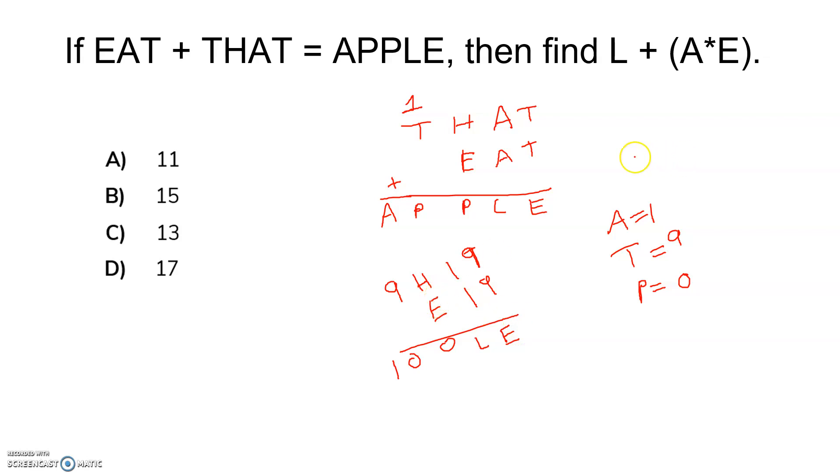Now see, from the options itself we can get the answer. See L times A plus E. Now A equals one we got, so L times A plus E is basically nothing but L plus E.